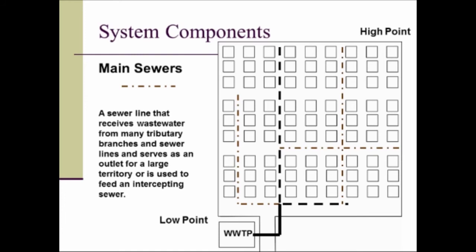Mains are usually smaller lines than the trunks. Trunks are usually smaller lines than the interceptors. So we're working our way from the larger lines to the smaller lines.